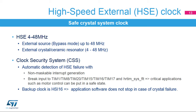The high-speed external oscillator provides a safe crystal system clock. The HSE supports a 4 to 48 MHz external crystal or ceramic resonator, and also an external source in bypass mode. A clock security system allows automatic detection of an HSE failure. In this case, a non-maskable interrupt is generated, and a brake input can be sent to timers to put critical applications such as motor control in a safe state. When an HSE failure is detected, the system clock is automatically switched to the HSI16, so the application software does not stop in case of crystal failure.